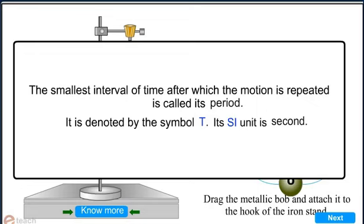The smallest interval of time after which motion is repeated is called its period. It is denoted by the symbol T. Its SI unit is second.